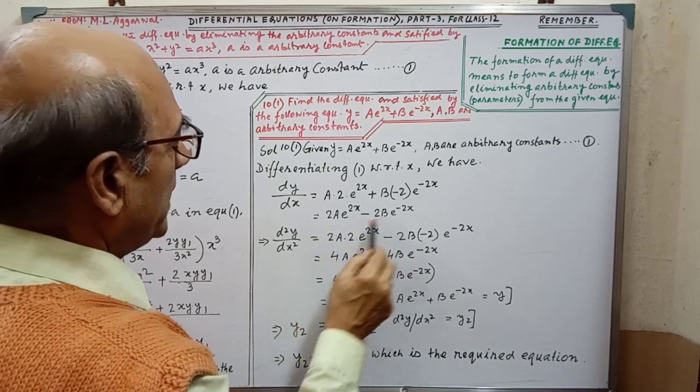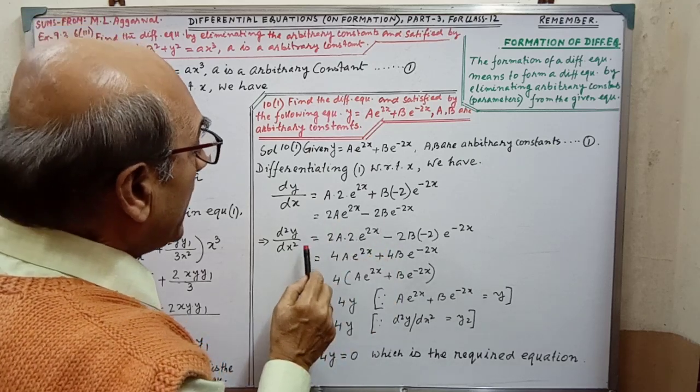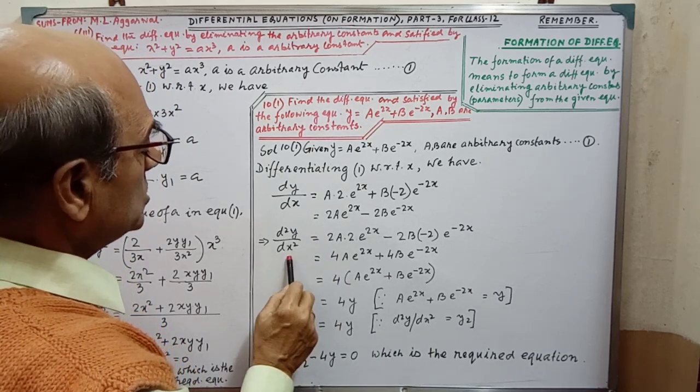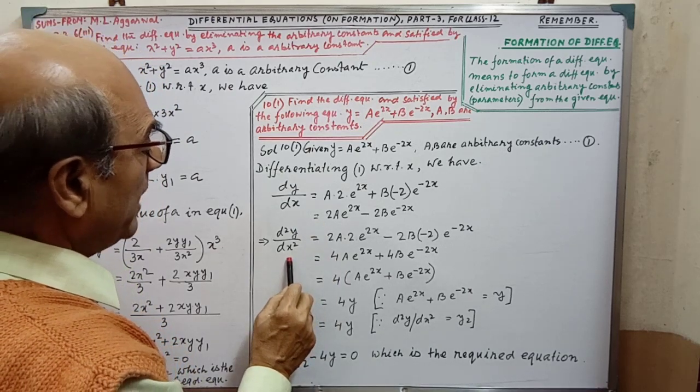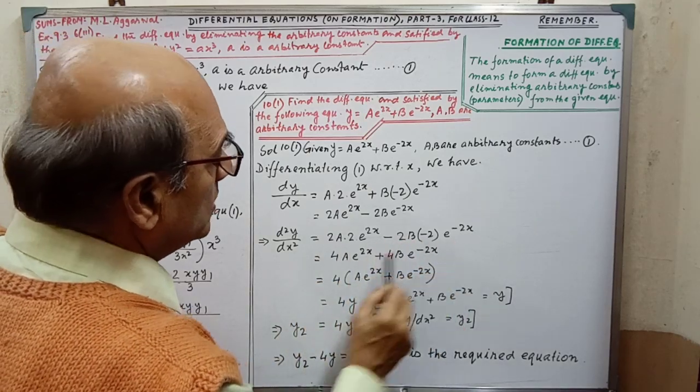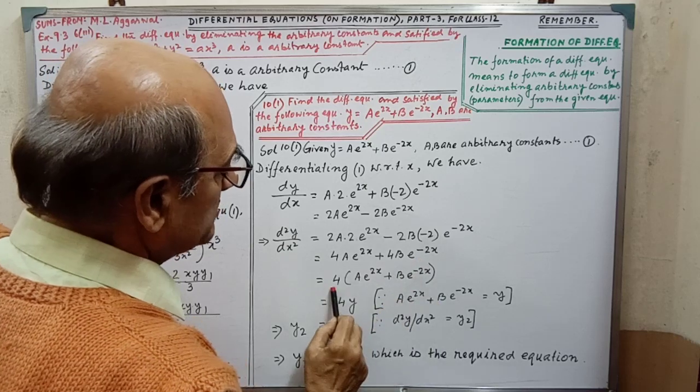Then, by simplifying, we are getting this. Again, we have to differentiate this expression. This is d square y by dx square. By applying the formula, we are getting this expression.